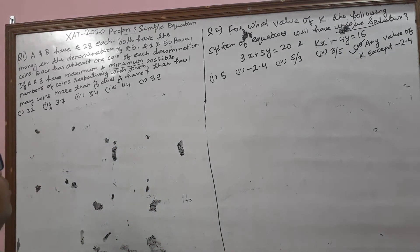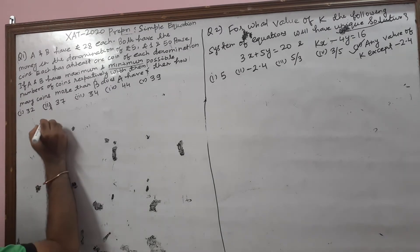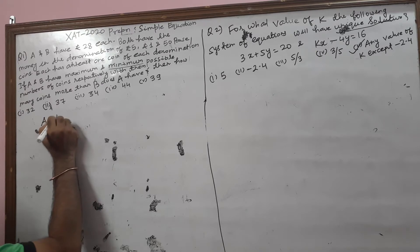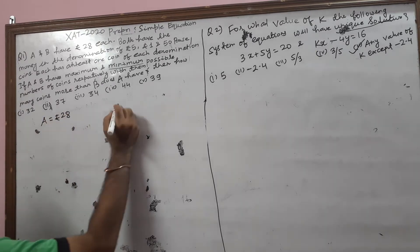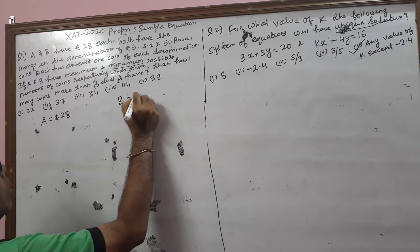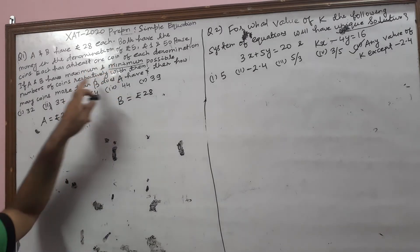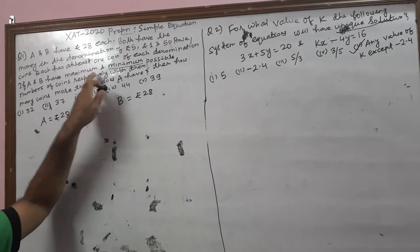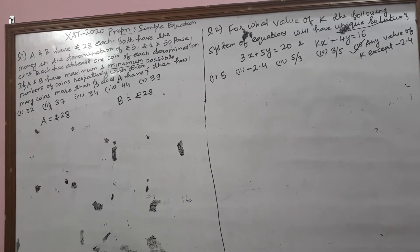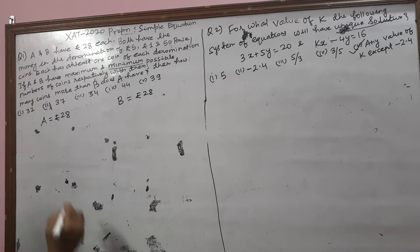Question: A and B each have 28 rupees. Both have money in the denominations of rupees 5, rupees 1, and 50 Paise coins. Each has at least 1 coin of each denomination. If A has the maximum possible number of coins and B has the minimum possible number of coins, then how many more coins than B does A have?